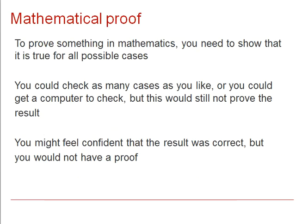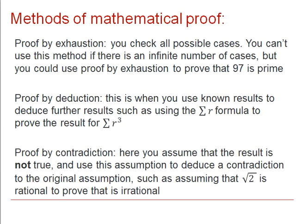Unlike science, where theories may be based on a high number of observations, if we want to prove something in mathematics, we need to show that it is true for all possible cases. You could check as many cases as you like for the previous example, or you could get a computer to check, but it wouldn't prove the result. You may feel confident the result's correct, but you do not have a proof.